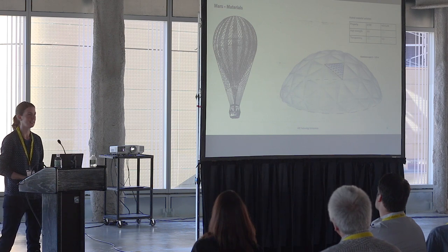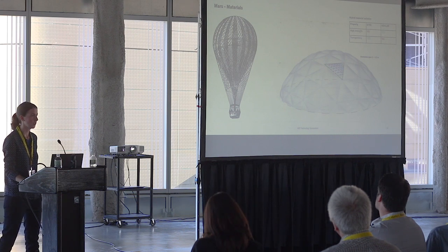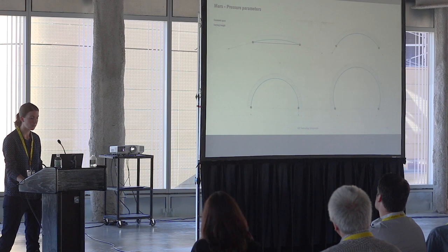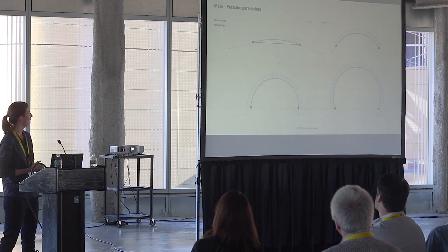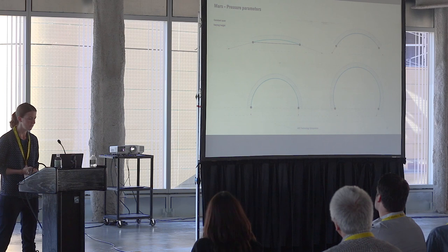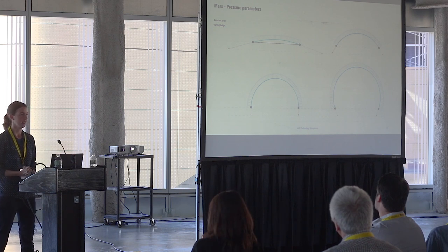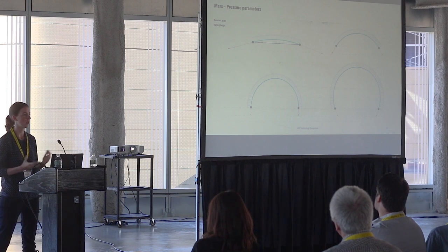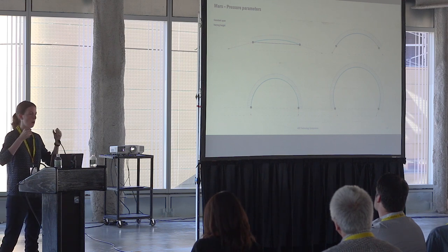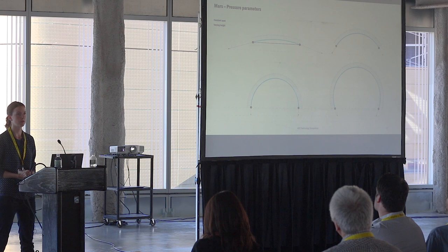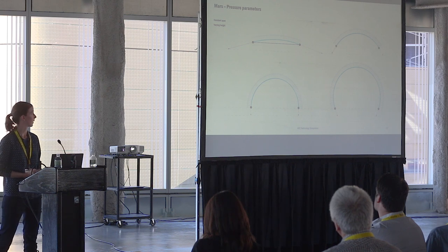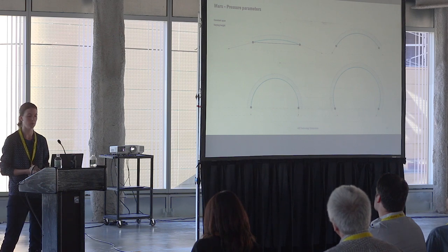That gave us a good indication of what spans we could work with for the cable net and membrane. We then ran simple simulations to figure out which parameters really influence the design. For example, with a constant span, does it matter if the dome is deep or shallow? Somewhat surprisingly, it doesn't matter for the vertical reactions — i.e., how much force you need to tie down the structure. Only the horizontal reactions vary, which we assumed a ring beam could handle.